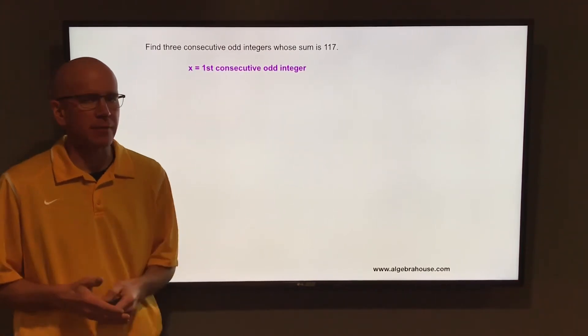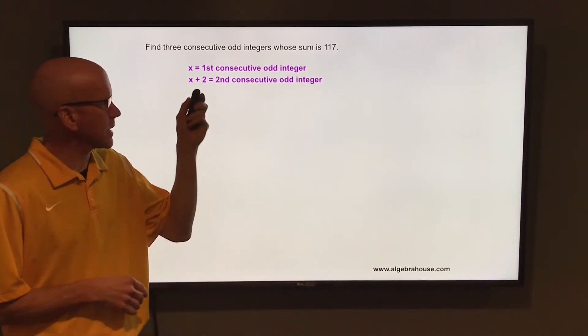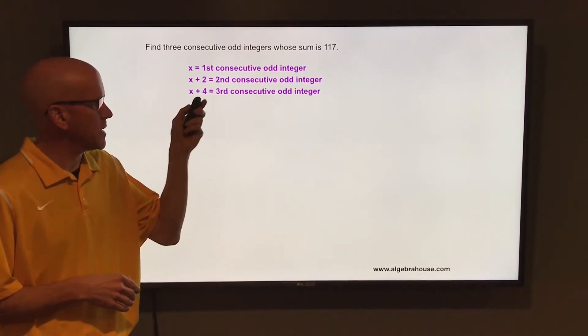So if you let x equal the first consecutive odd integer, then the second one, since they increase by 2 each time, the second one would be x plus 2. And again, increasing by 2, the third consecutive odd integer would be x plus 4.